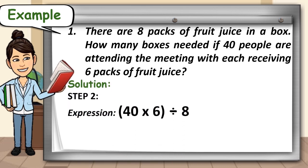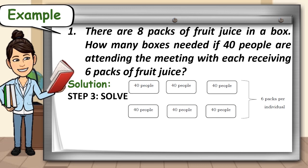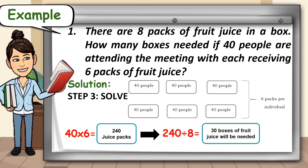Step 2: we will derive an expression based from the given. Our expression will be the quantity of 40 times 6 divided by 8. For our last step, we will now solve the problem. We have 40 people with each receiving 6 packs of fruit juice, so 40 times 6 is equal to 240 juice packs. Each box contains 8 packs, so we divide 240 by 8, which gives us 30 boxes of fruit juice. That answers the unknown quantity in our problem.